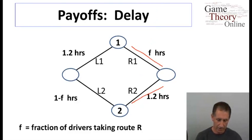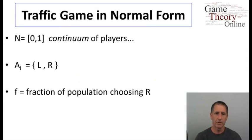The situation on the left is constructed similarly. It is first a fixed delay of 1.2, and then a variable delay, again as a function of the players who decided to go on the right, in this case 1 minus that fraction. How do we reason about such a game?